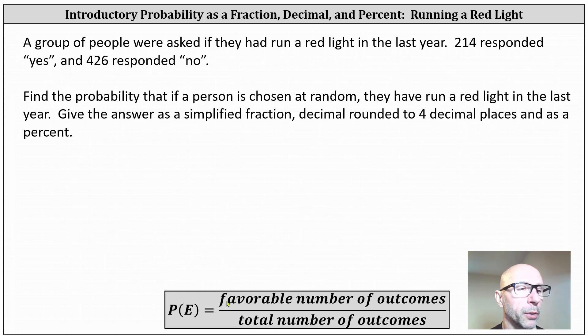Recall the probability of an event is equal to the favorable number of outcomes divided by the total number of outcomes.